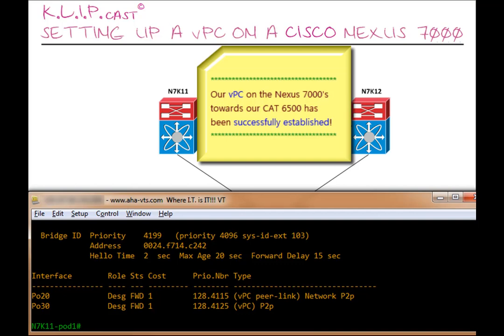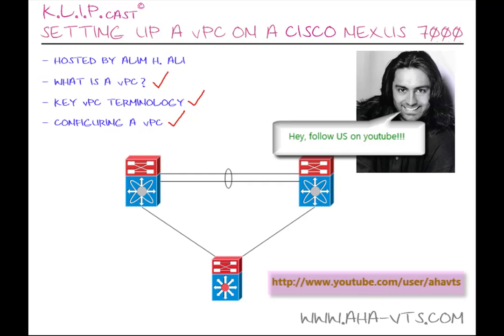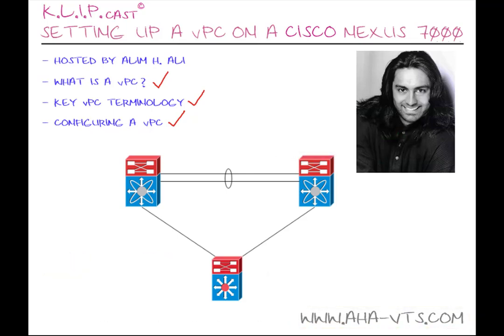From every indication of the show commands we have issued, our VPC topology is now up and running. VPCs are pretty cool! In this clipcast we talked about what is a VPC, some key terminology related to the VPC, and actually configuring the VPC on a Cisco Nexus 7000. You can follow us on YouTube or visit us on the web at www.aha-vtis.com for more clips, clipcasts, and much more. I hope this clipcast on setting up a VPC on a Cisco Nexus 7000 was informative. Thank you for viewing.